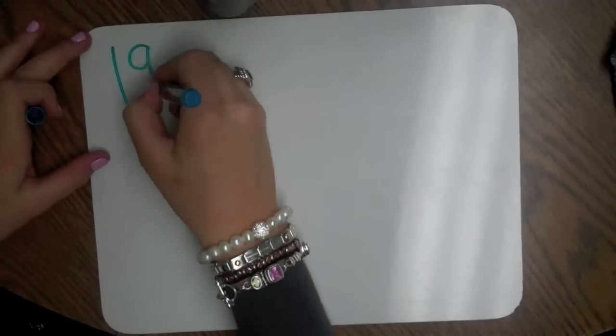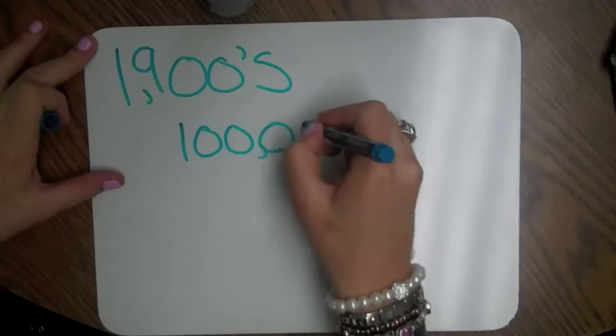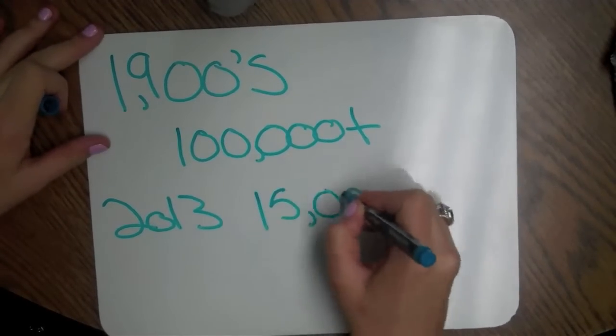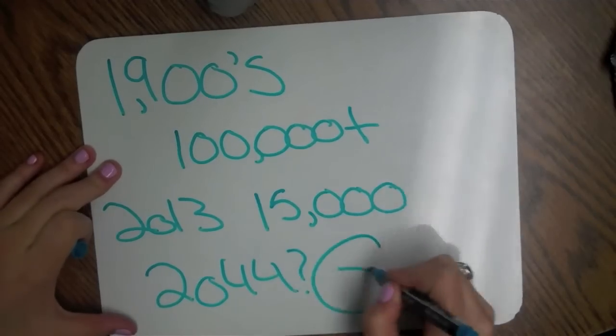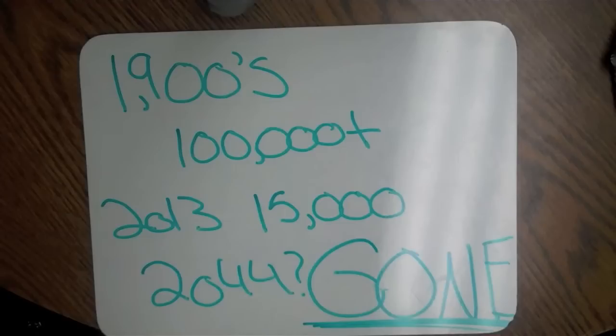Although once found throughout Southeast Asia, orangutans today live only on the islands of Borneo and Sumatra, and their numbers have dwindled from perhaps several hundred thousand to between 15,000 and 24,000. At the current rate of decline, orangutans could be gone in as little as 10 years.